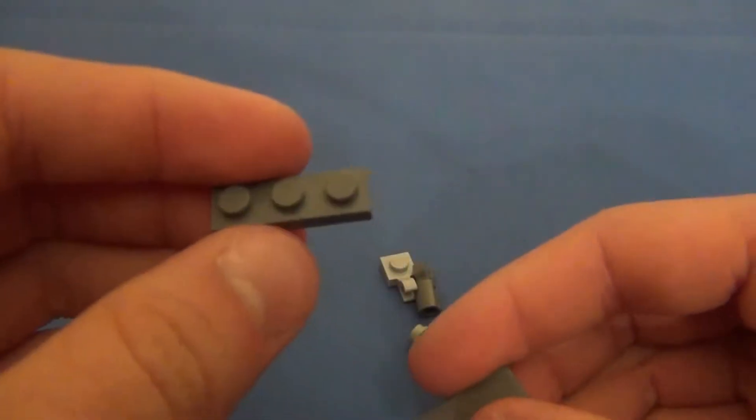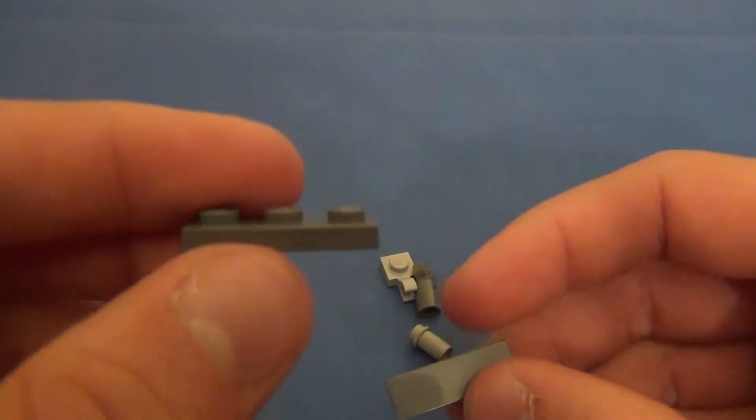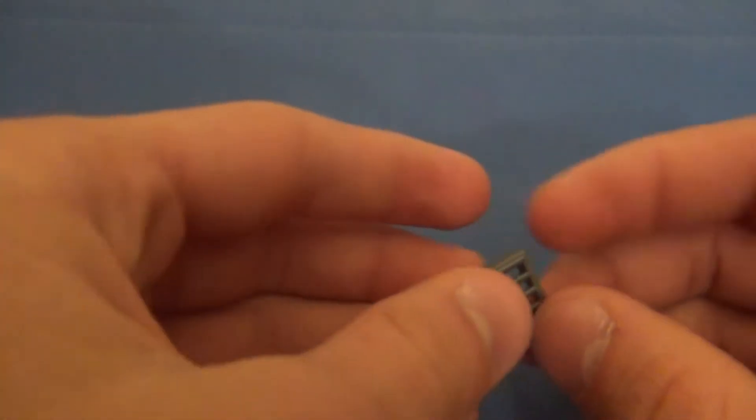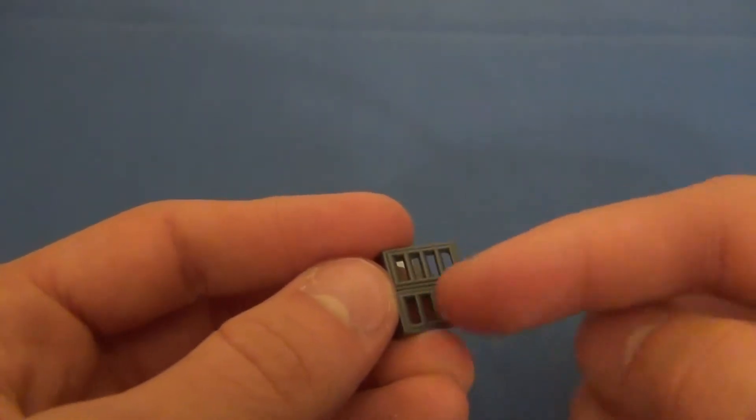one dark grey 1x3 tile and one dark grey 1x3 plate, two of these 1x2 lengthwise slopes,